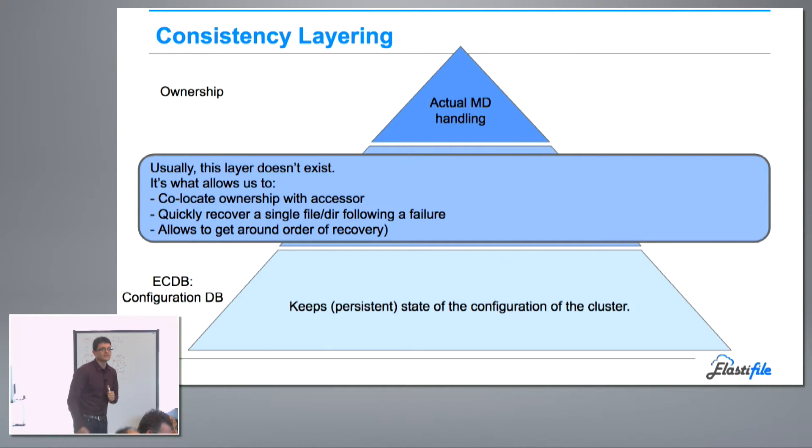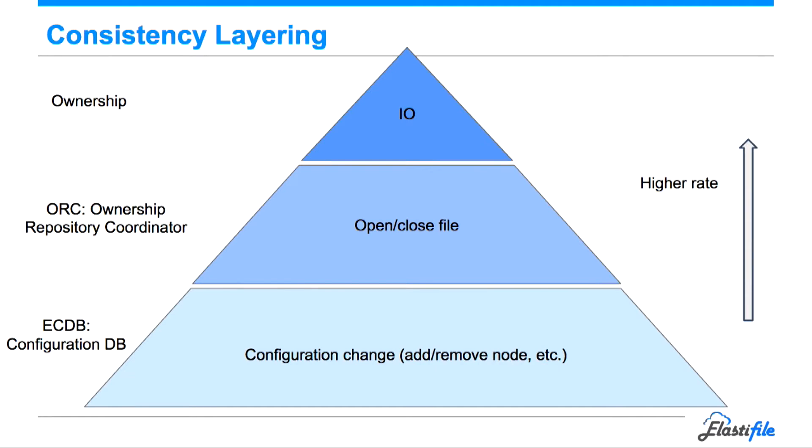One observation is that you might invert this pyramid, because the persistent state of the configuration of the cluster is a relatively small amount of data. The ownership is a little bit bigger, and the actual metadata has lots of activity going on there. That's valid — and in the next few slides you'll see why it's structured this way.